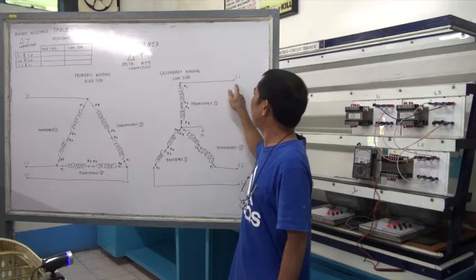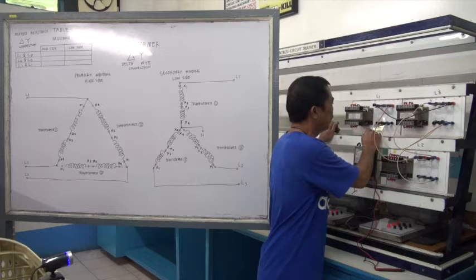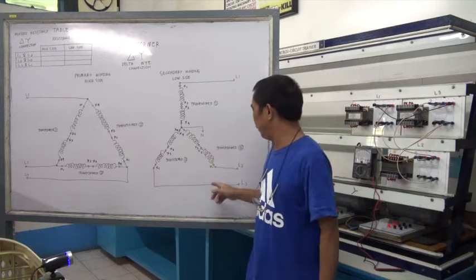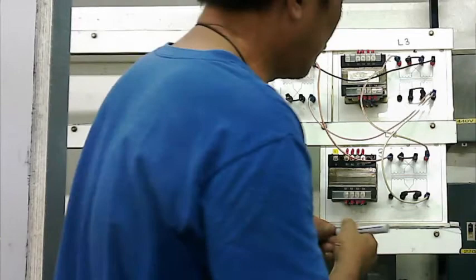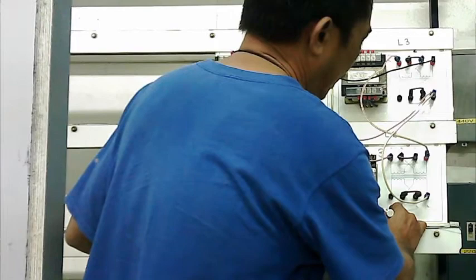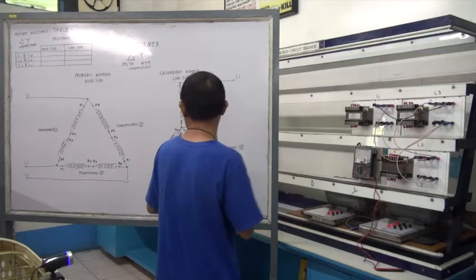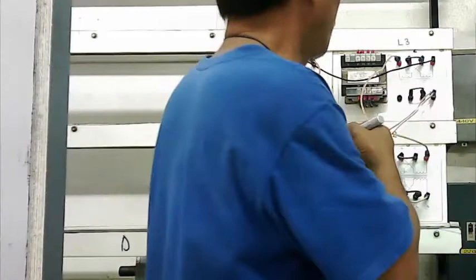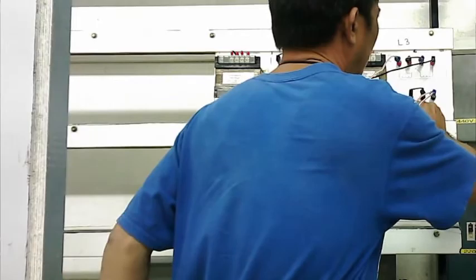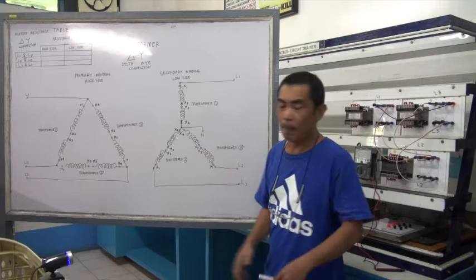The X1 terminal of transformer one refers to Line 1 — this is our output terminal. X1 of transformer three refers to Line 2, and X1 of transformer two refers to Line 3. This one is now Line 3.